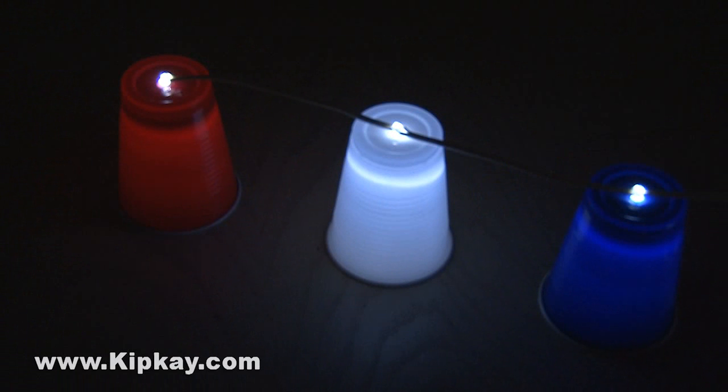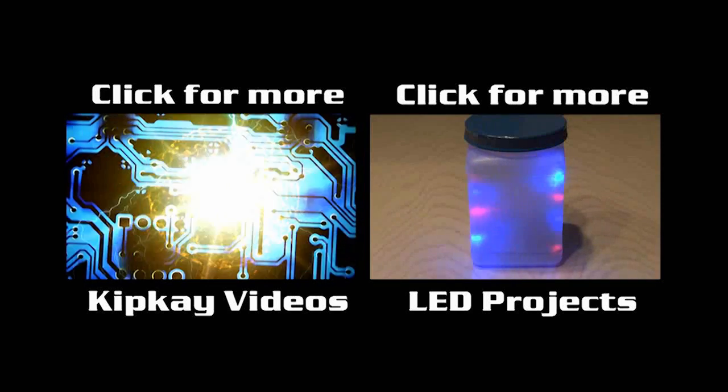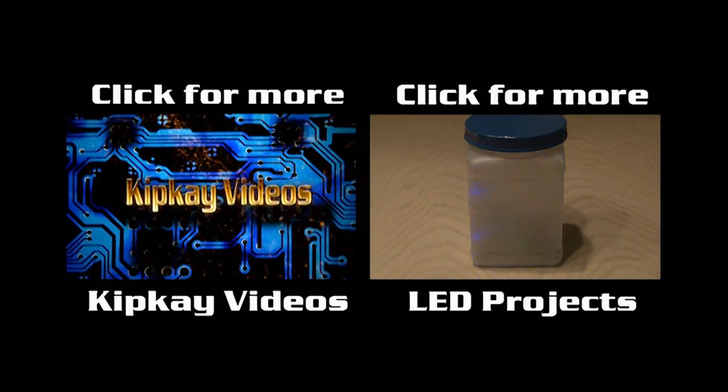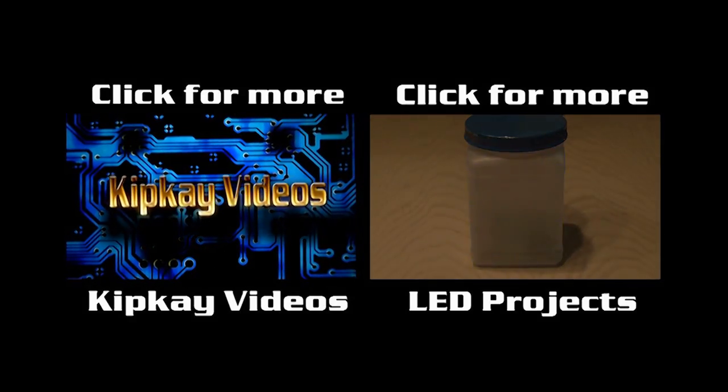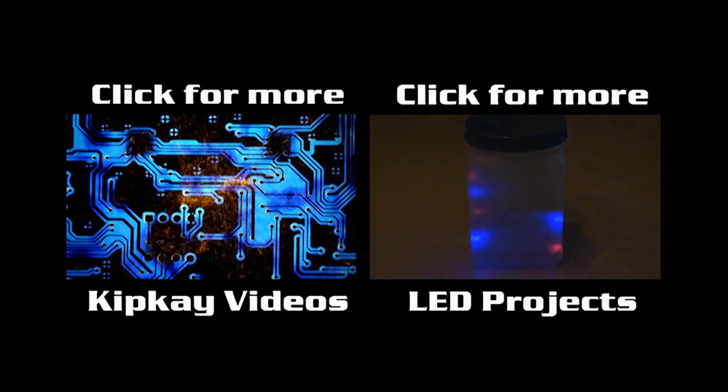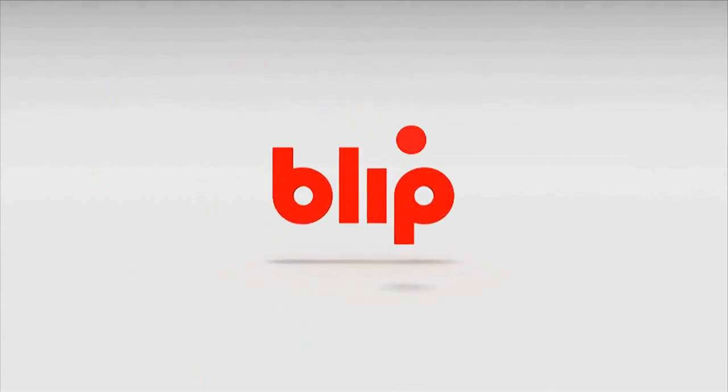Well, that's how to make 4th of July Solo Cup party lights. I hope you enjoyed this project. For more cool hacks, pranks, and DIY videos, click the box on the left to go to my channel. Or click the box on the right for some other LED projects. Thanks for watching, and happy holidays!